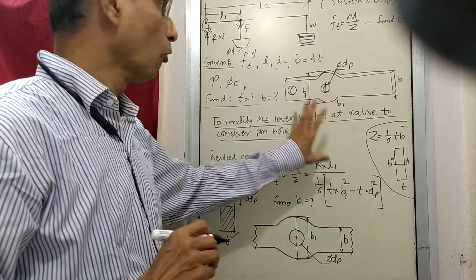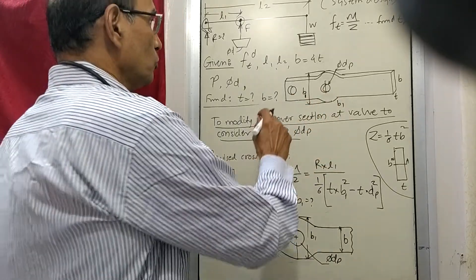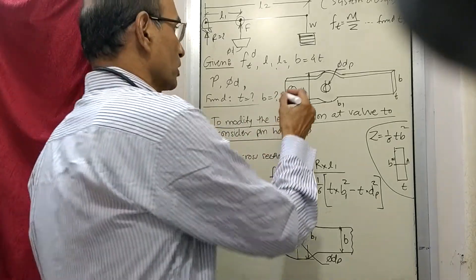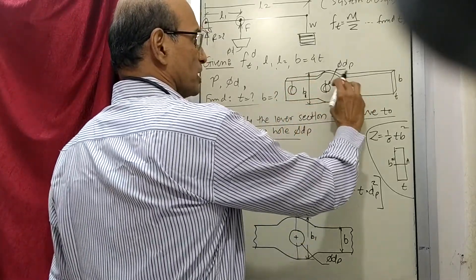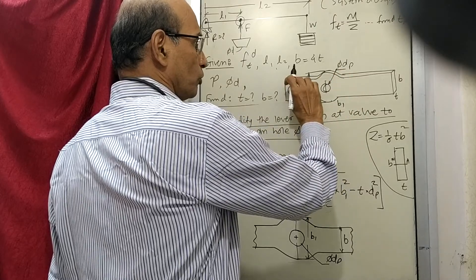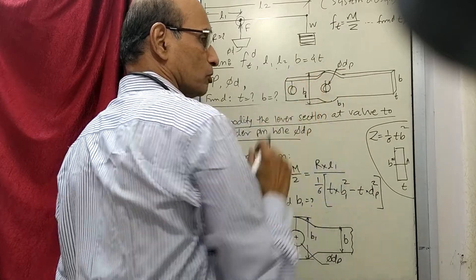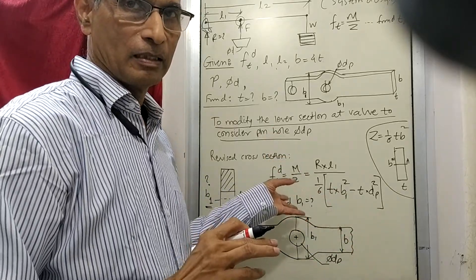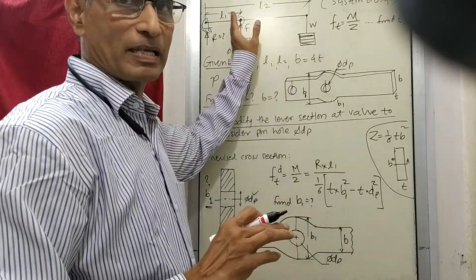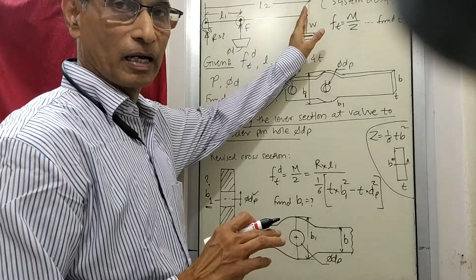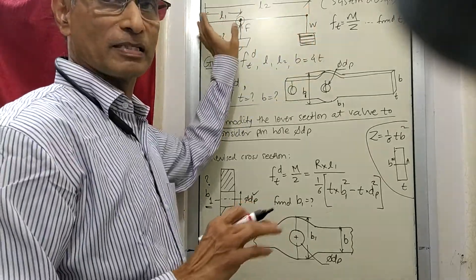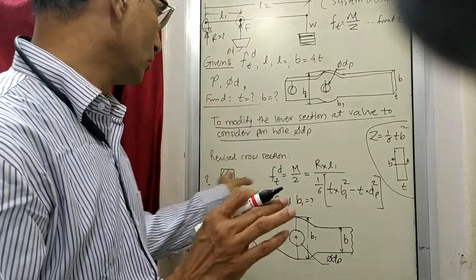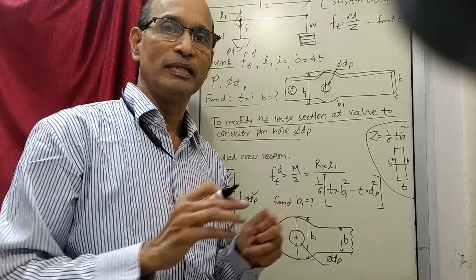Next, we have to do something similar at the other end. We changed b to b1 at the first location — are we going to change b to something else here also? The answer is no, because if you remember how the bending moment diagram was drawn, the bending moment is maximum at the first location, zero here, and zero at the other end. So at this place there is no bending moment acting.